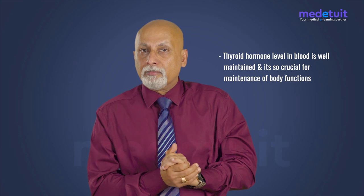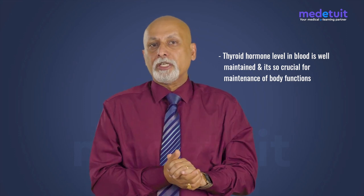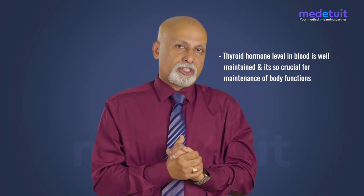On the contrary, if the thyroid gland is producing less hormone, there will be an increase in activity from the hypothalamo-hypophysial axis. When thyroid hormone level is increased, the hypothalamo-hypophysial axis gets suppressed. This is a true example of negative feedback through which thyroid hormone level in the blood is well maintained — crucial for the maintenance of body functions.